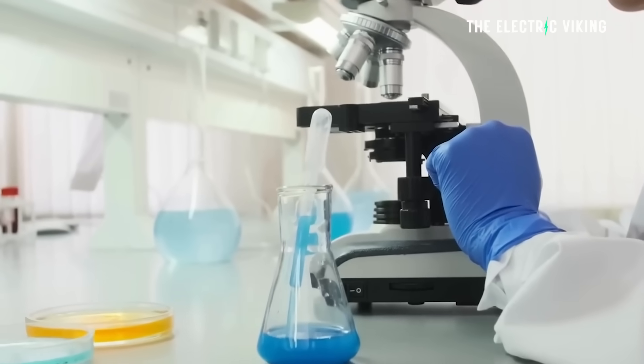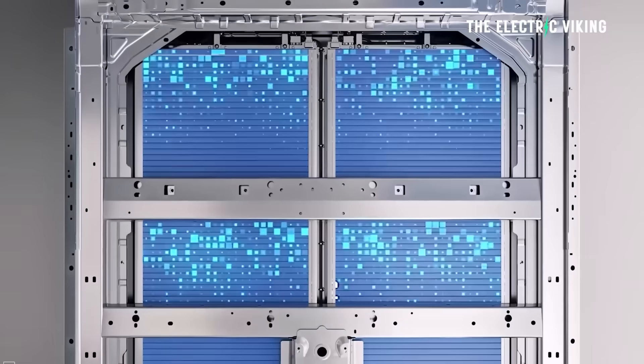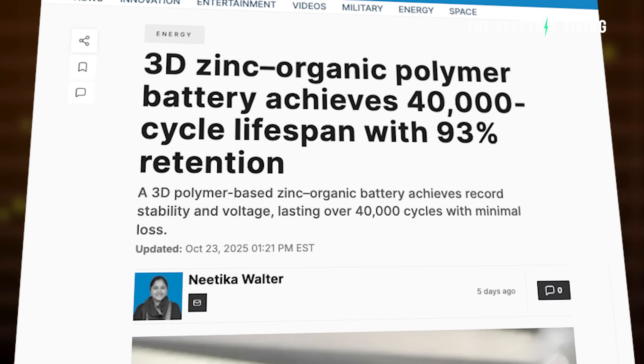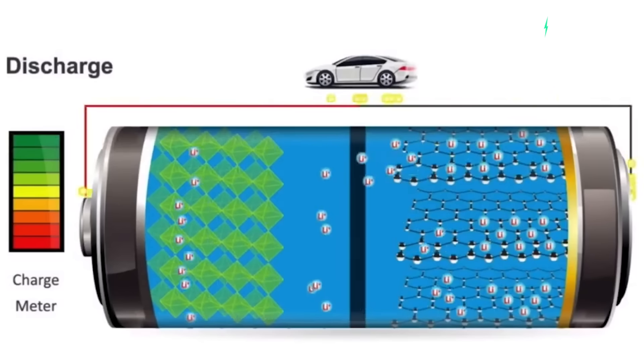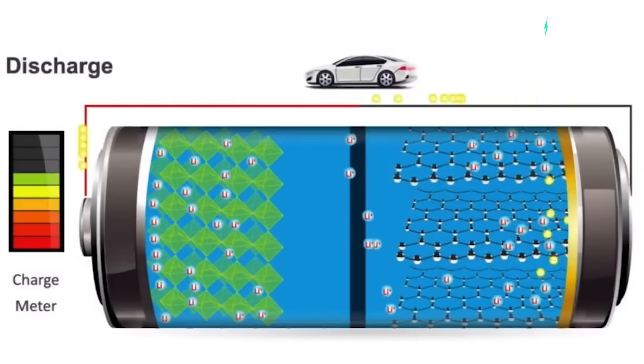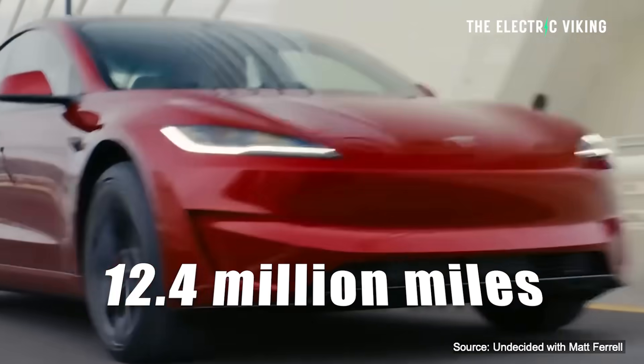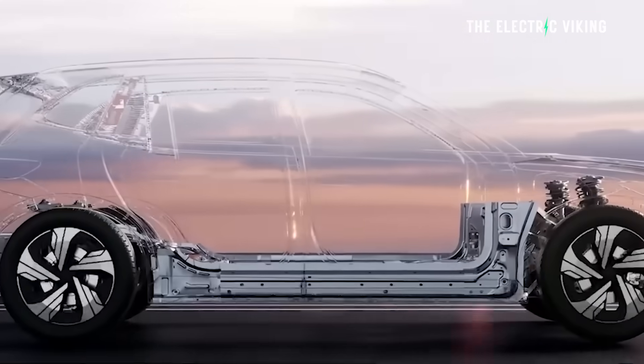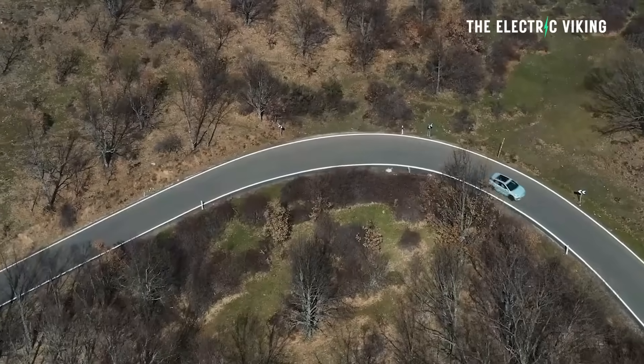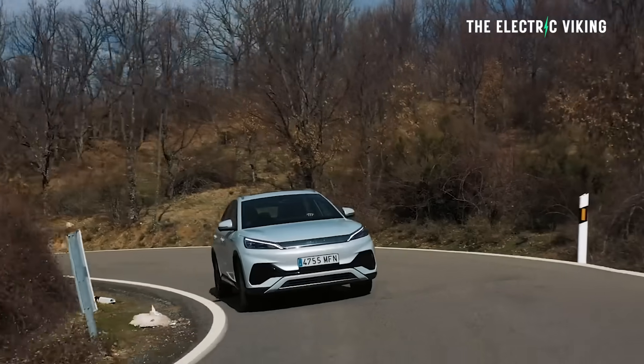A new zinc-based battery has been tested and it officially can do 40,000 cycles before it gets to below 70% battery degradation. That's the equivalent of 12.4 million miles of driving, or 20 million kilometers. This is crazy.